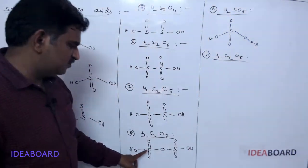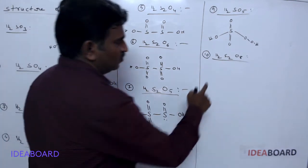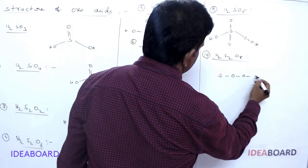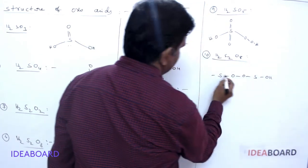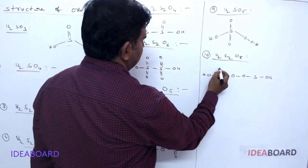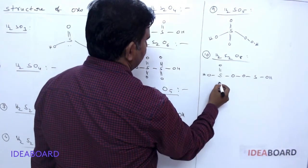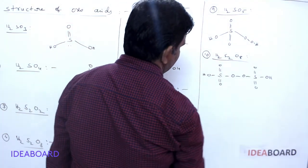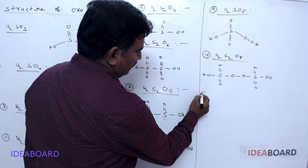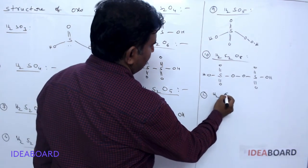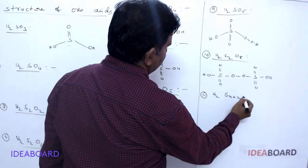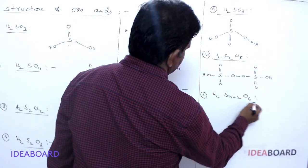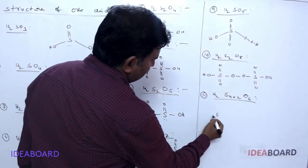The tenth structure is H₂S₂O₈, peroxydisulfuric acid. For H₂S₂O₈, between the two sulfur atoms we write two oxygens as a peroxy bond, then double bond O on each sulfur and OH groups on each sulfur.